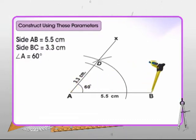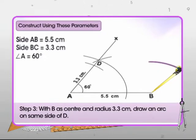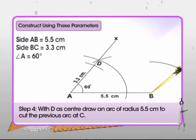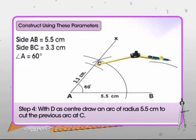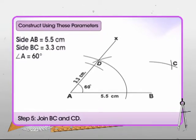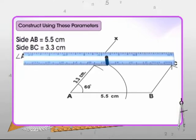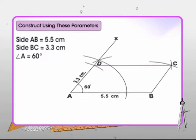Since opposite sides of a parallelogram are equal in length, with B as center and radius equal to 3.3 centimeters, draw an arc. Now draw another arc intersecting this arc with D as the center and radius equal to 5.5 centimeters. Let this point of intersection be C. Finally, join point B with C and C with D. The required parallelogram ABCD is drawn.